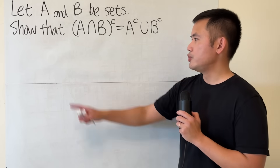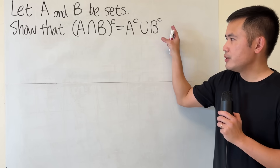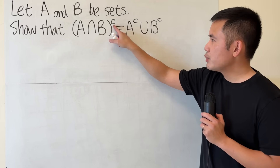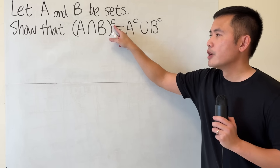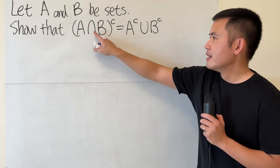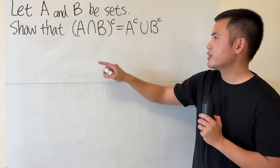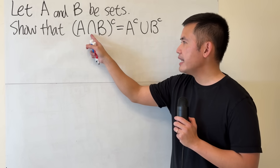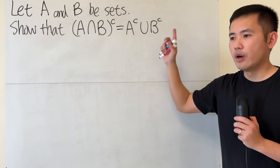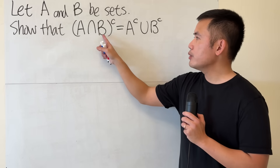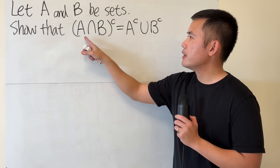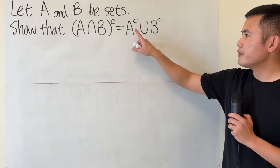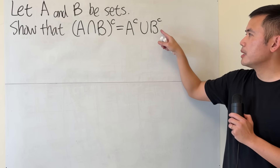Right here we are going to show that — of course we have this equation here — and I will have to explain the notations. The little c right here stands for the complement, which means not in the set. This right here means the intersection, this right here means the union. You can think about this as the word 'and', and this right here as the word 'or'. So we are going to show that the complement of A intersect B is equal to the complement of A union the complement of B.